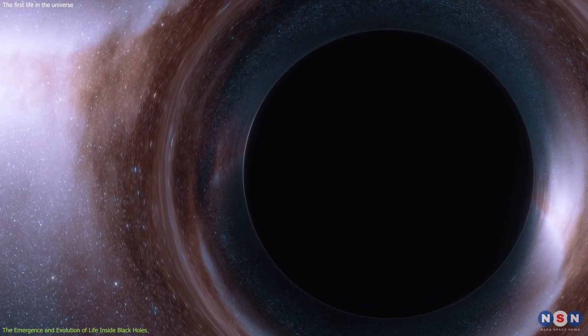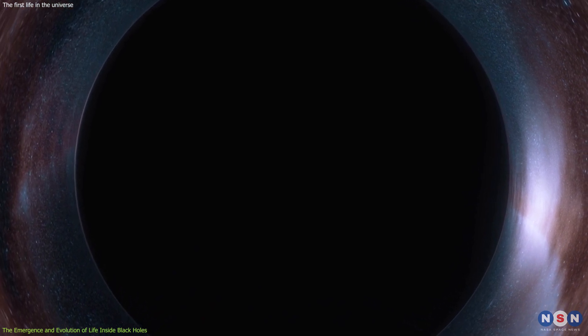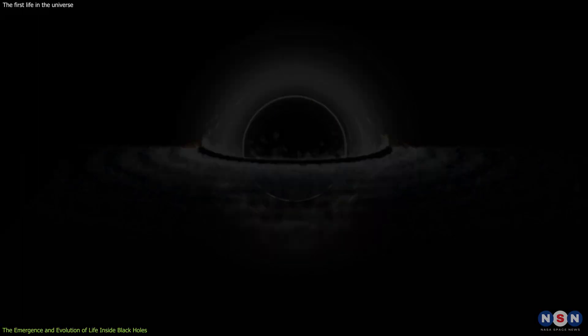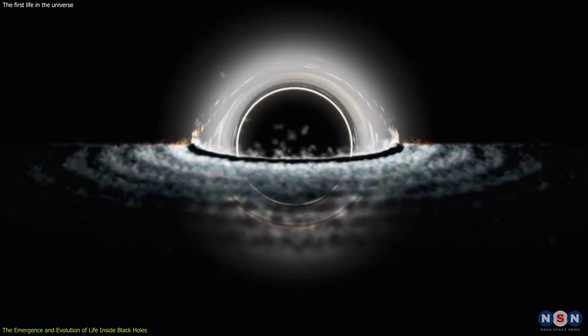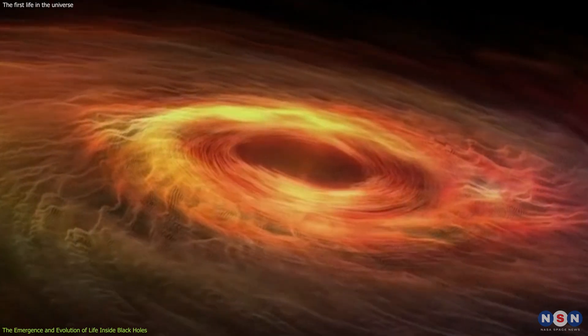They also estimated that the temperature inside the black hole would be about 10 to the power of 10 Kelvin, or about a billion times hotter than the surface of the sun. The researchers acknowledge that their model is very simplified and idealized, and that there are many uncertainties and challenges that need to be addressed.